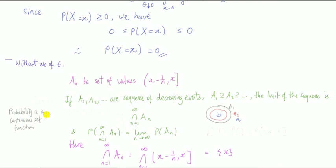Probability is a continuous set function. Continuous is what you think it means in maths, about functions. So if a_1, a_2, and so on, a sequence of decreasing events, i.e. a_1 is contained in a_2, is contained in a_3, and so on, the limit of this sequence is given by the intersections.